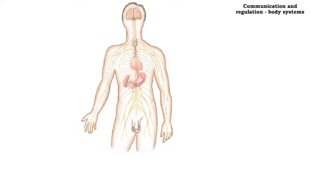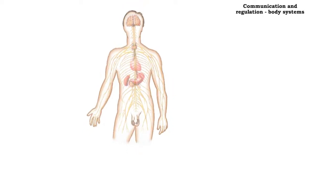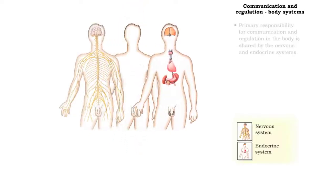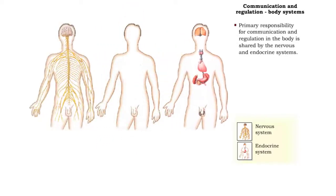Communication between the body's cells, tissues, and organ systems is crucial to effectively regulate and maintain homeostasis. Two body systems — nervous and endocrine — play particularly important roles in fulfilling these major tasks.